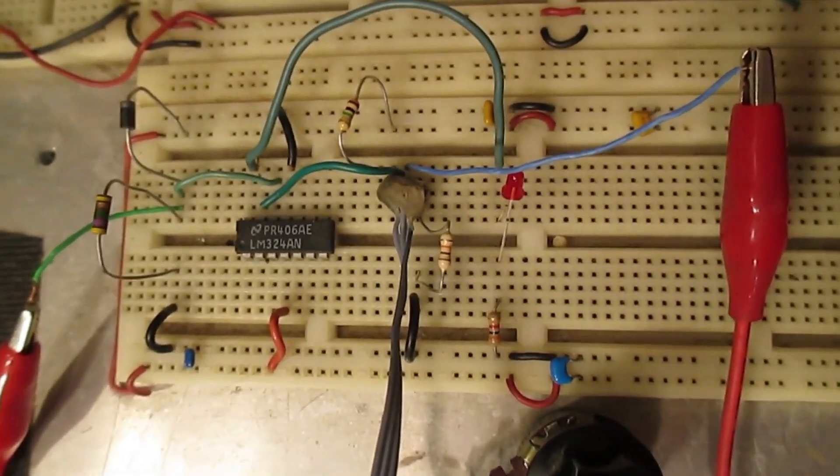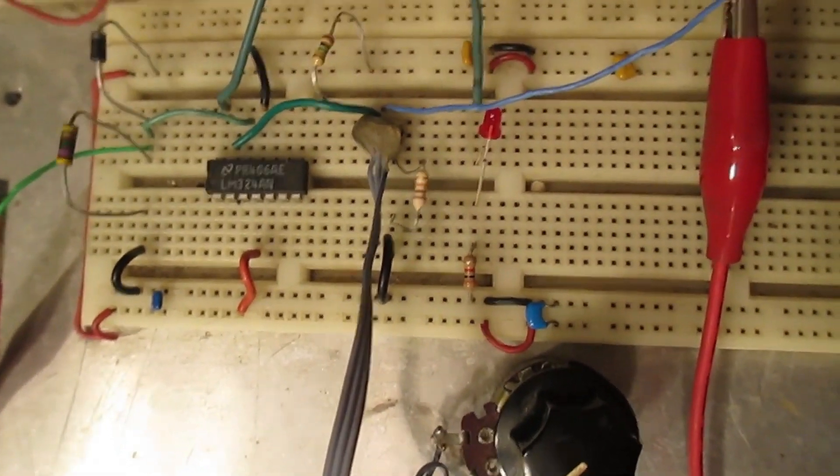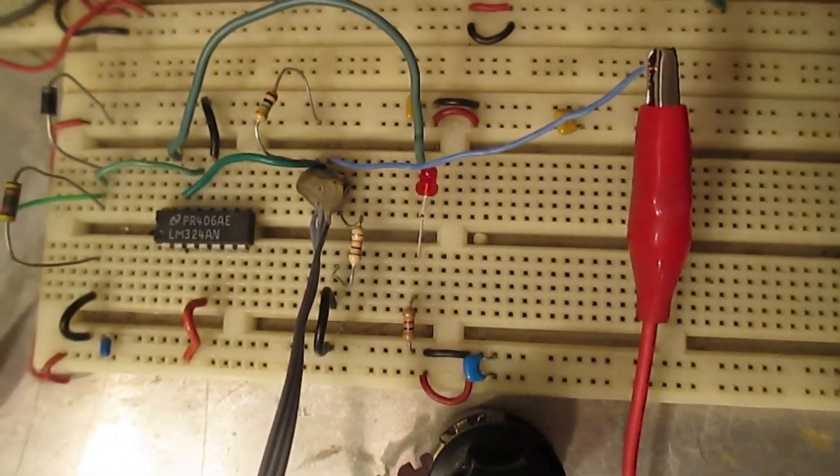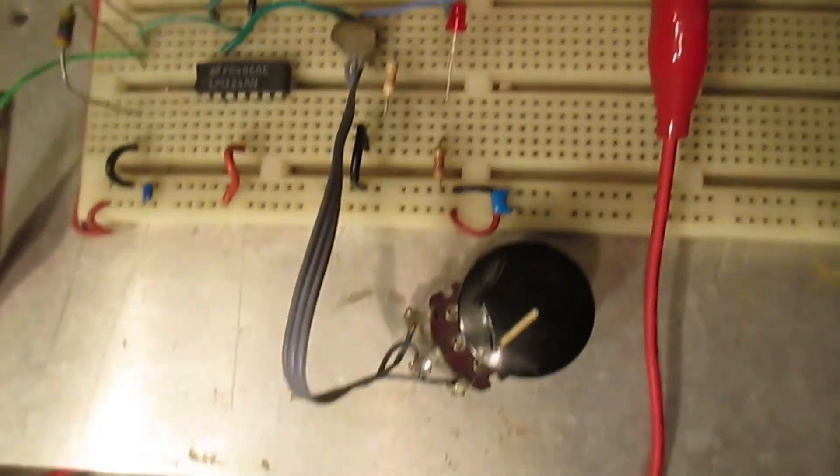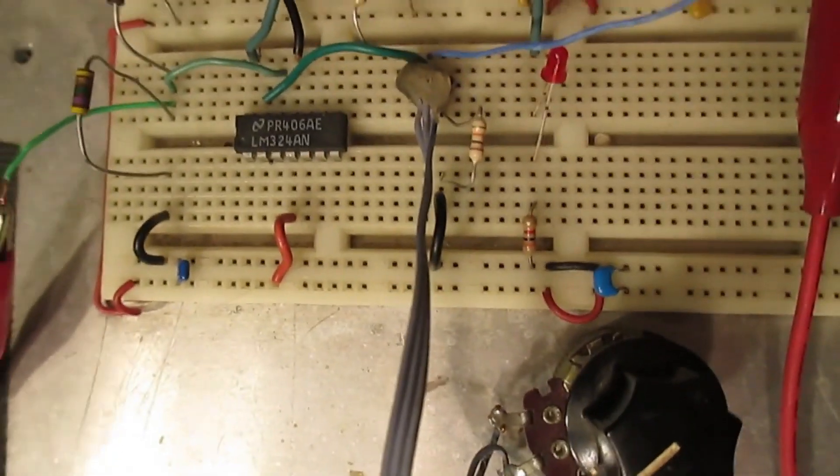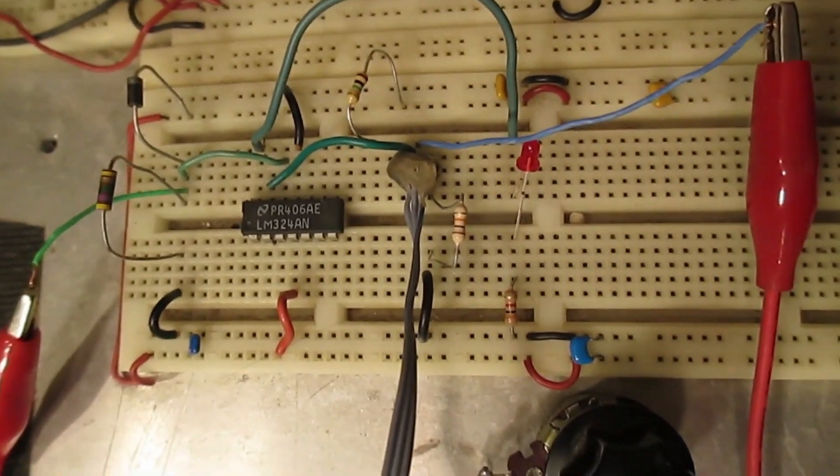Our circuit has the reverse bias diode from VCC going through a 4.7 megaohm resistor going into the non-inverting input of the op-amp. A trim pot is biased to the inverting input and is the threshold voltage adjustment.